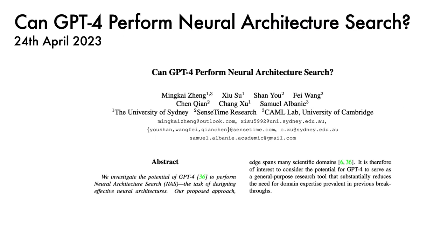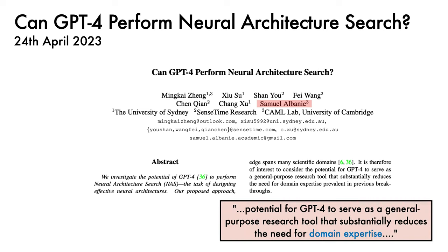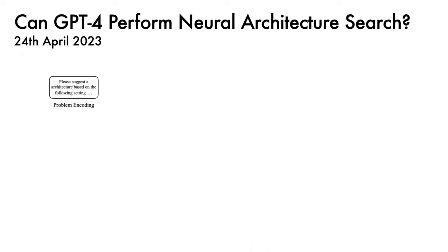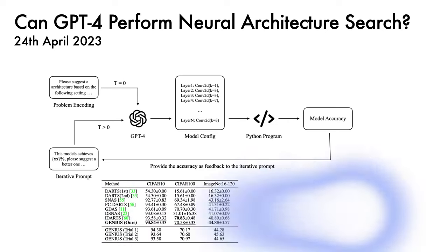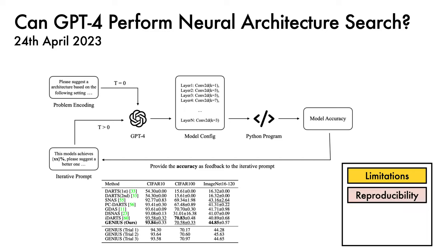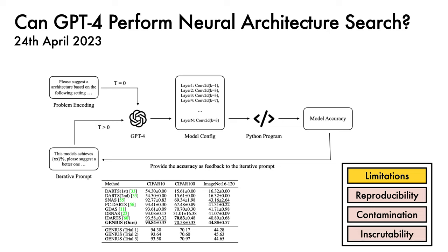Next, we have a paper looking at whether GPT-4 can perform neural architecture search. I think this work is interesting, though I should note my view is biased as I'm a co-author. One question posed is whether GPT-4 could serve as a general-purpose research tool that substantially reduces the need for domain expertise. The method starts from a prompt encoding the problem, fed to GPT-4, which outputs an architecture configuration. A Python program evaluates the architecture and returns its accuracy back to the model for a handful of iterations. Preliminary results suggest this is viable on relatively small-scale benchmarks. Limitations include reproducibility issues with the OpenAI API, risk of test set contamination since GPT-4's training set is unknown, and generally inscrutable model behavior.